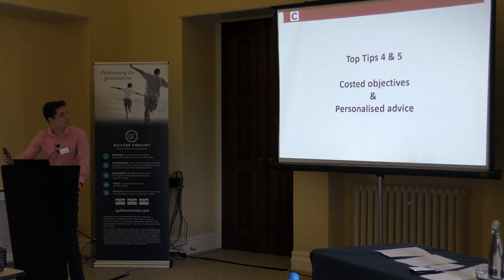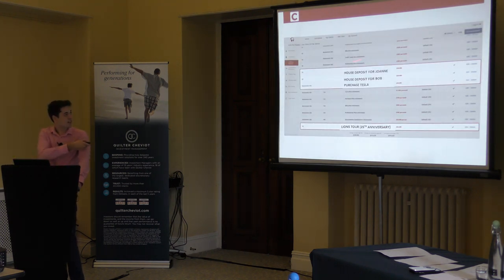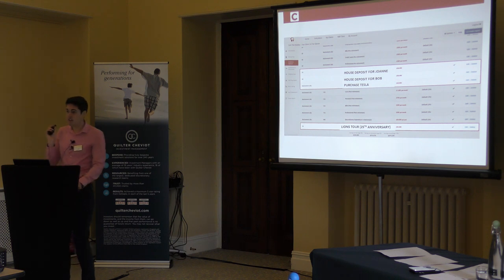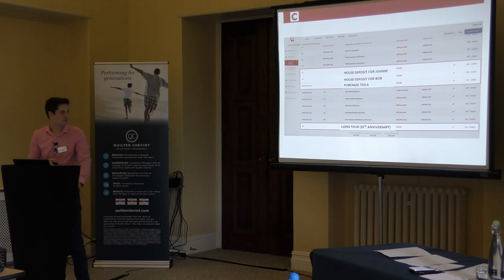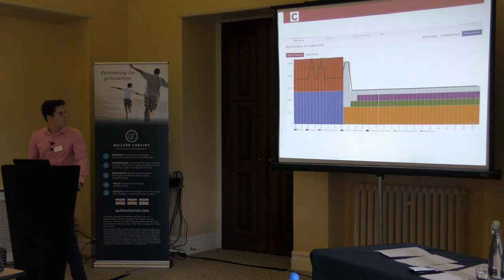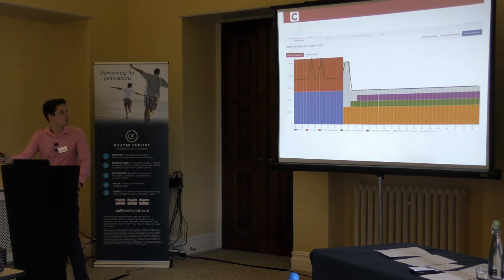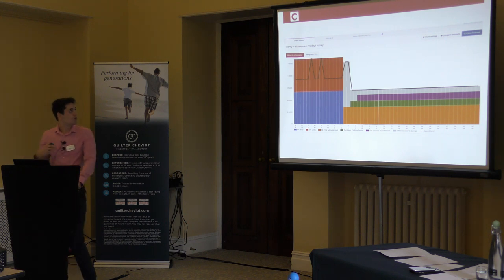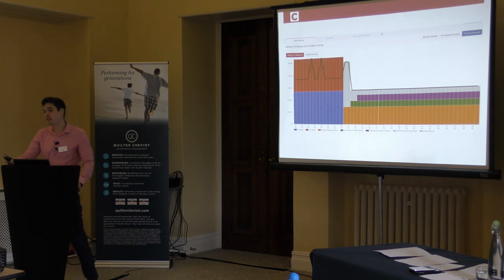So there are those house deposits for the kids, the Tesla purchase at retirement age, and the Lions tour — all factored into our cash flow plan in their specific financial goals, in their own words. Once we've entered it all in, this is the result — these are the graphs we're going to be presented with, kept very client-friendly. We want all of this to be easy for the client to understand, keeping it all very simple.